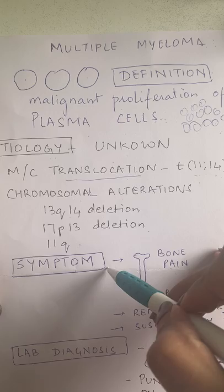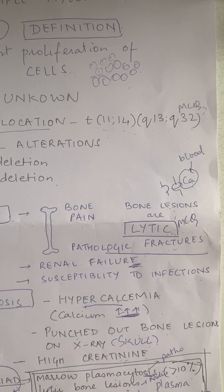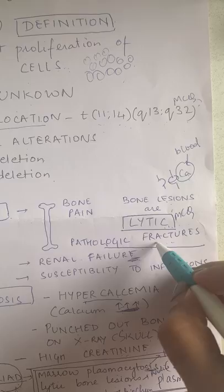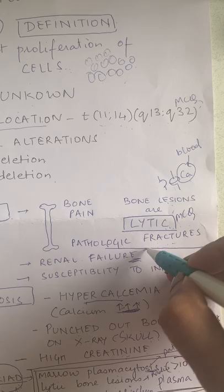The most important thing is symptoms, because the patient will come to you with symptoms only. The symptom is bone pain. Generally it is a middle-aged person, male or female, who will come with bone pain, but the most important history they will give is of pathologic fractures — a very small amount of force but a quite major fracture, like just a slip while walking and there is a fracture.